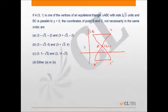This will be a round one question. A point is given. It is one of the vertices of an equilateral triangle ABC with side 2√3 units, and BC is parallel to y = 0. Y = 0 means the x-axis, so BC is parallel to the x-axis.